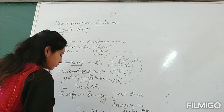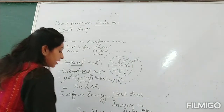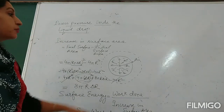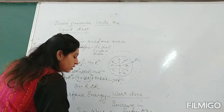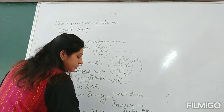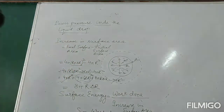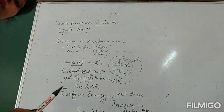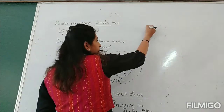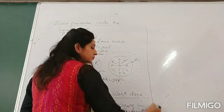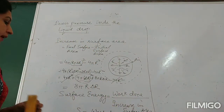Now, what is another way to calculate the work done? We will calculate work done by applying the formula: work done equals force into distance. We are ultimately trying to calculate excess pressure, so first we calculate work done.